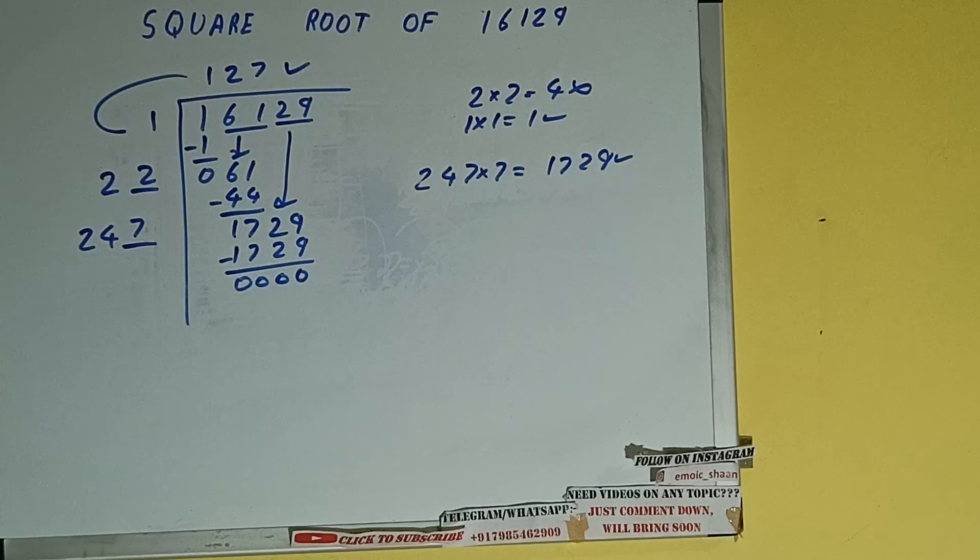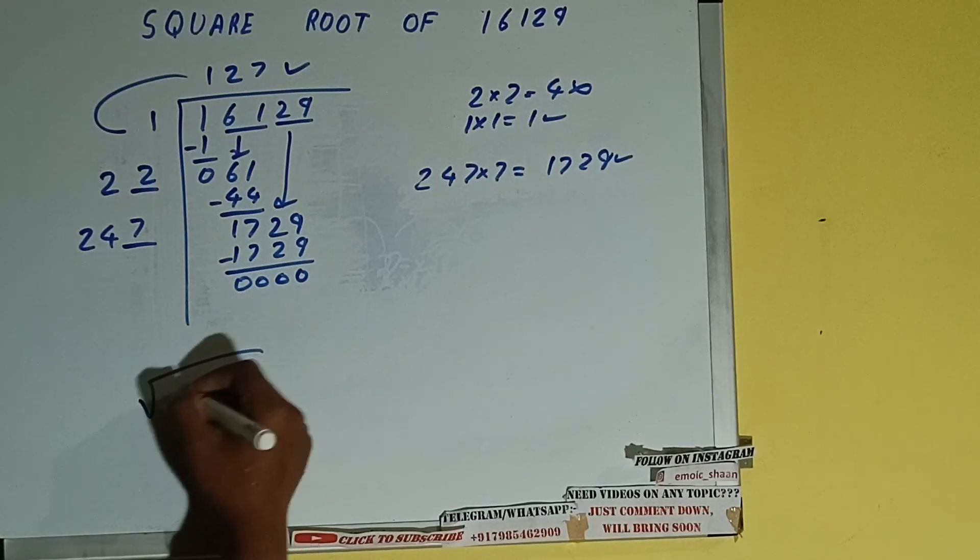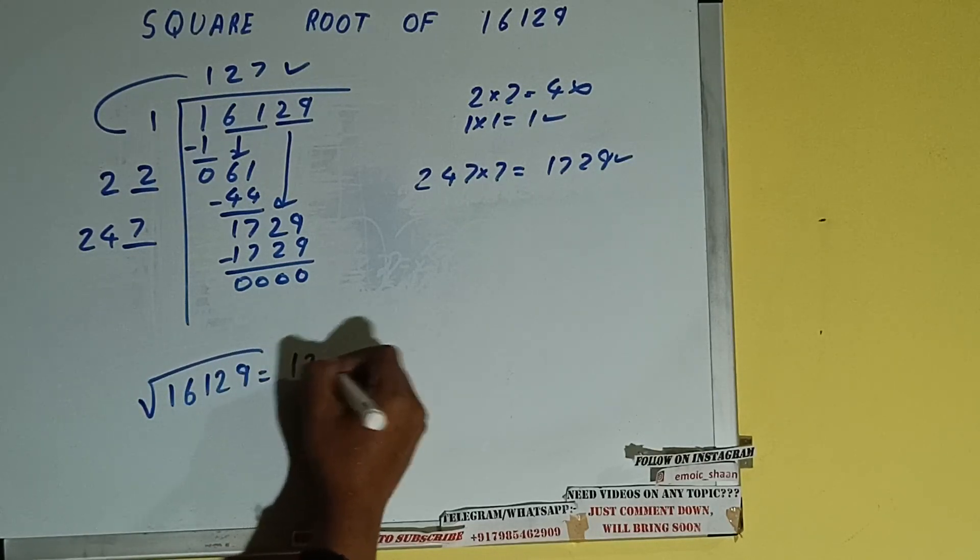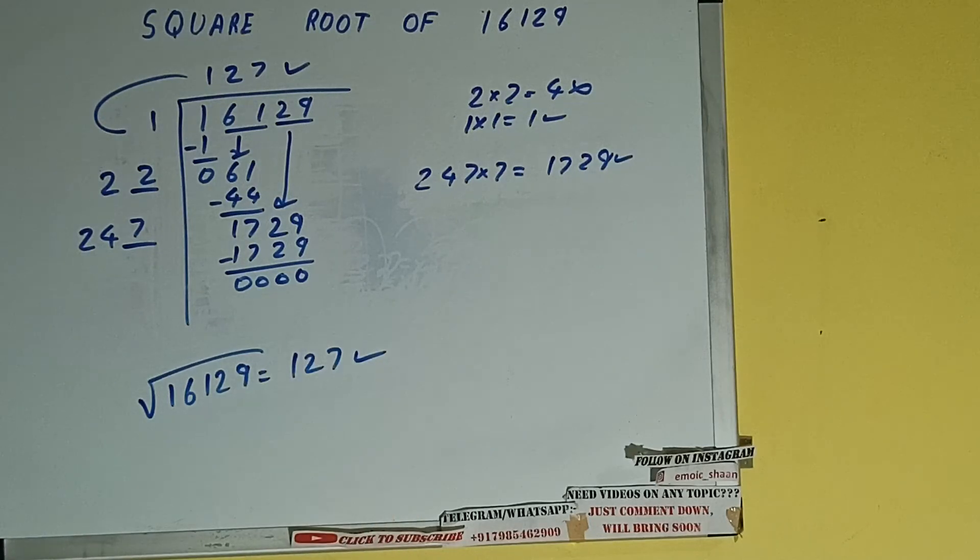Once we get 0, whatever is in the quotient will be the answer, that is 127. So square root of 16129 will be 127. That's it, so this is all. If you found the video helpful, please hit the like button, do consider subscribing, and thanks for watching.